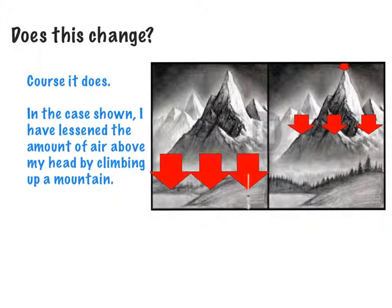So this would tell us our air pressure is being smaller and if I climb right to the peak of this mountain the arrow is smaller still which implies that the air pressure is even smaller.